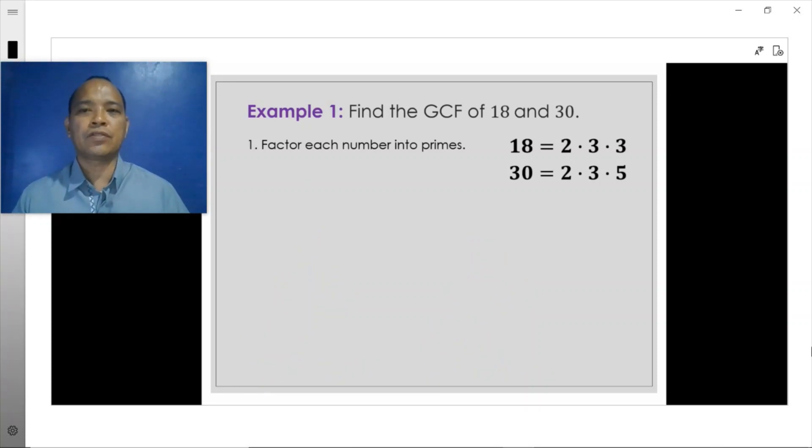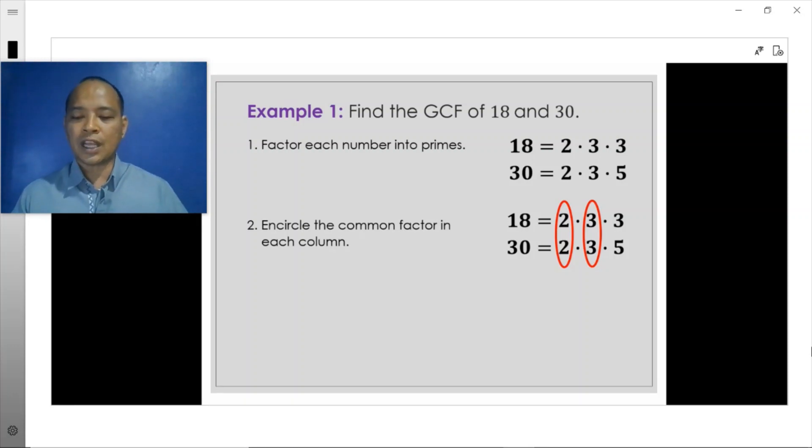After we express each of these numbers in its prime factorization form, we then encircle the factors which are common to both 18 and 30. We would see here on the right that both numbers 18 and 30 have 2 and 3 as common factors. After we identify the factors that are common to both numbers, then we bring down these common factors, meaning we identify 2 and 3 as the common factors.